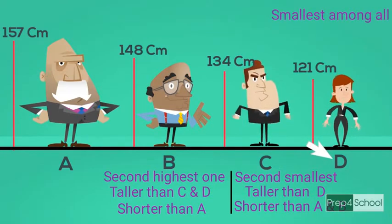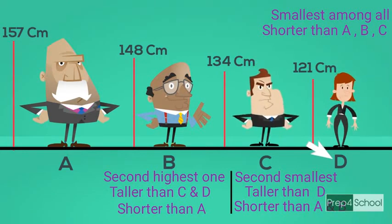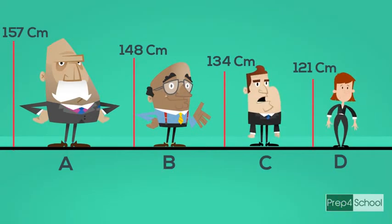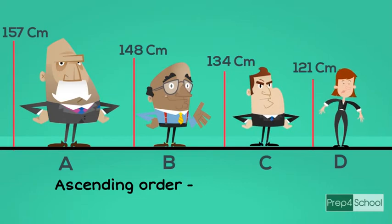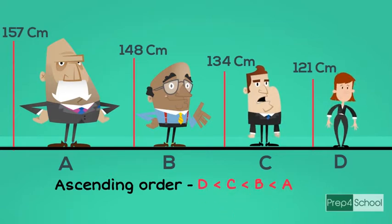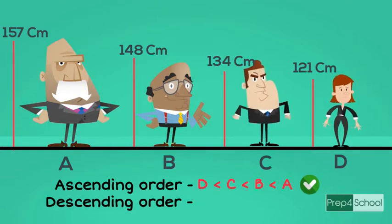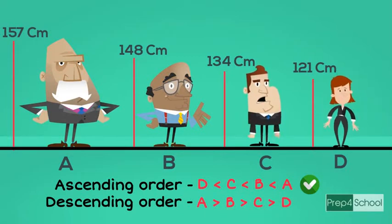How can this be written in ascending and descending order? In ascending order, the smallest comes first, moving to the right as height increases: D < C < B < A. In descending order, the tallest comes first and the shortest last: A > B > C > D.